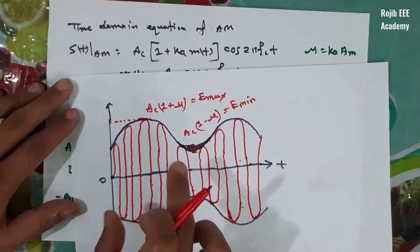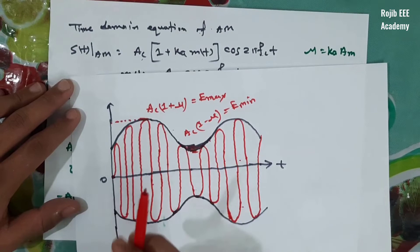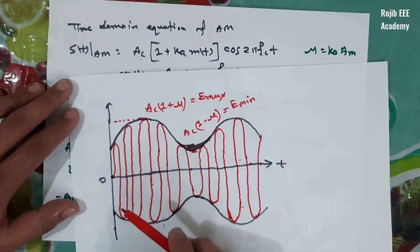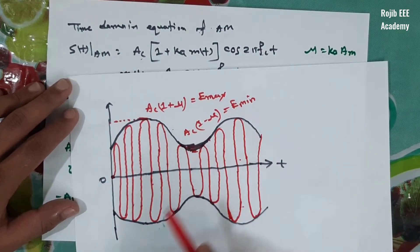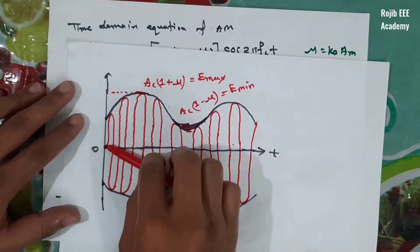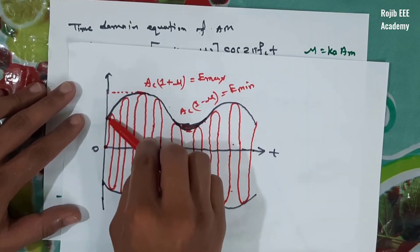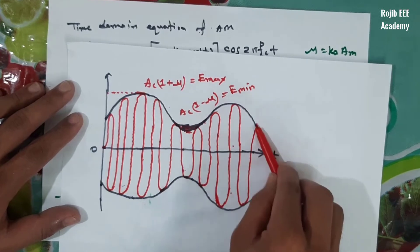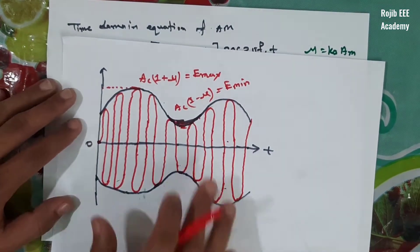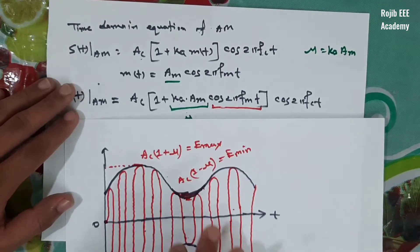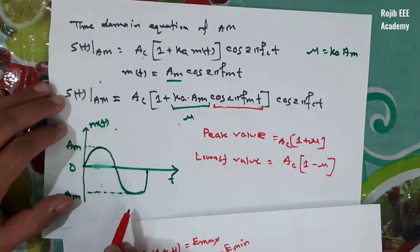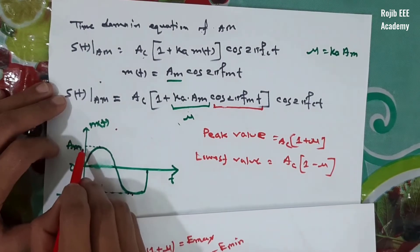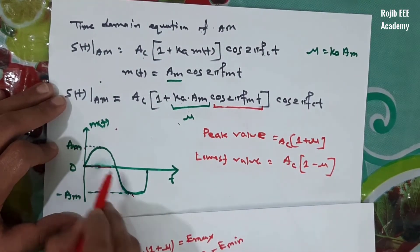How does amplitude modulation work? The carrier signal has its amplitude varied. This is amplitude modulation — the distribution is amplitude modulation. Here we know amplitude modulation. Here we see +AM and -AM. The peak value amplitude is noted.